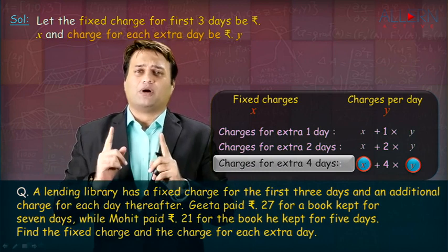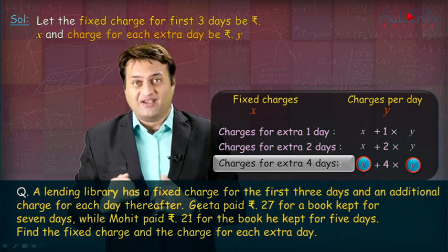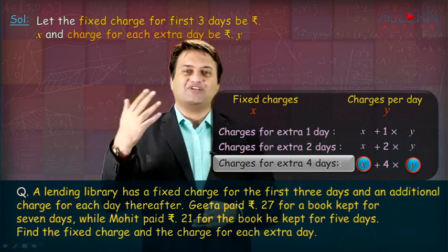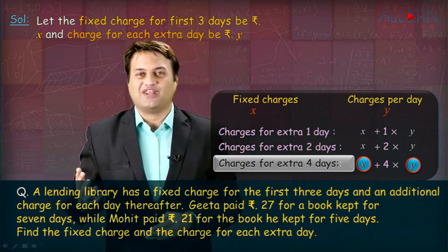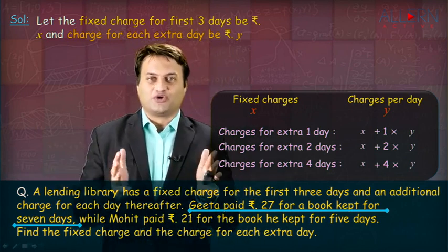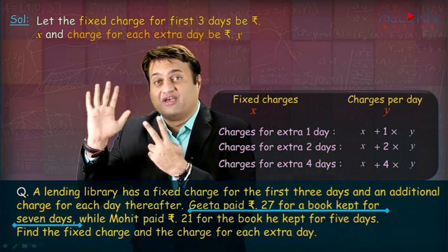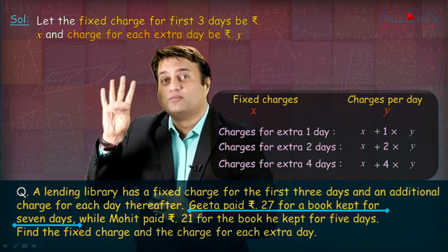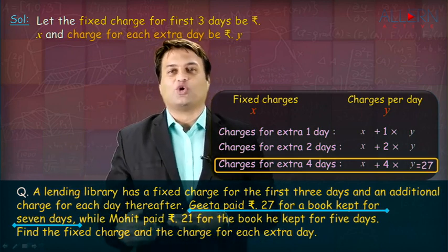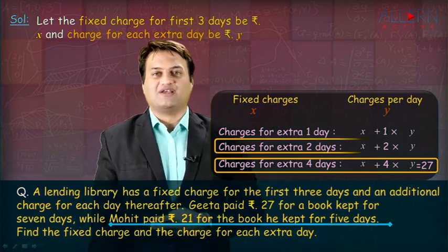Just remember that X is the fixed charge for 3 days. So if a book is kept for 7 days, the extra charges would be for 4 days. Now look at the first condition: Geeta paid Rs. 27 for a book kept for 7 days. Out of 7 days, 3 days are fixed, so 4 extra days. For 4 extra days it is X plus 4Y, and the total charge is given as 27. So the first equation is X plus 4Y equals 27.